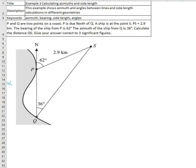In this example we have two points on the coast, point P and point Q, on the same line. Point P is due north from point Q, which means this is the north direction. We are given that we have a ship.